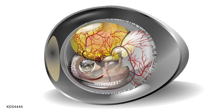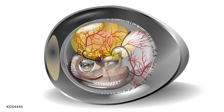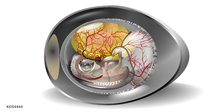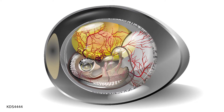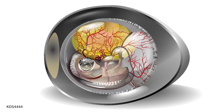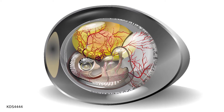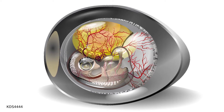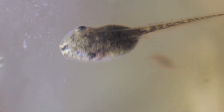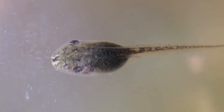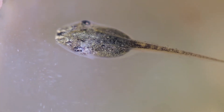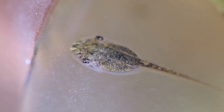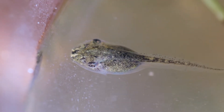It is difficult to follow the embryonic development of most terrestrial vertebrates, as it takes place in an egg or inside their mother. Tadpoles of amphibians, in contrast, enable us a unique glance into embryonal development.